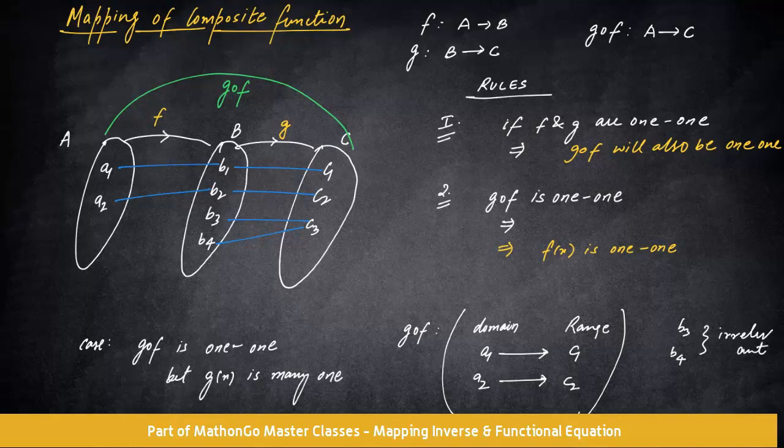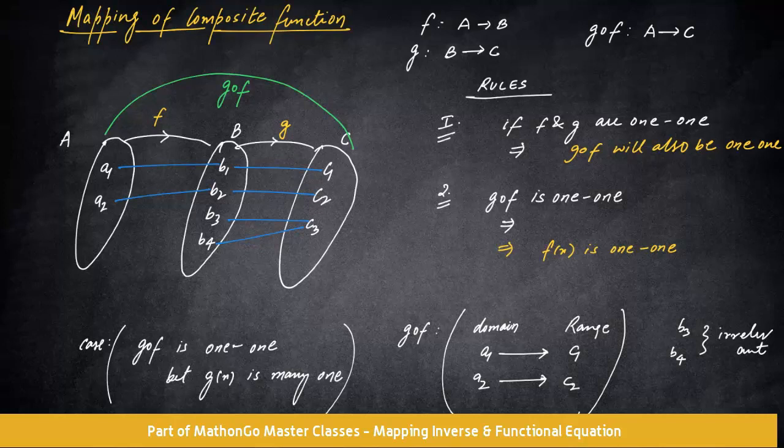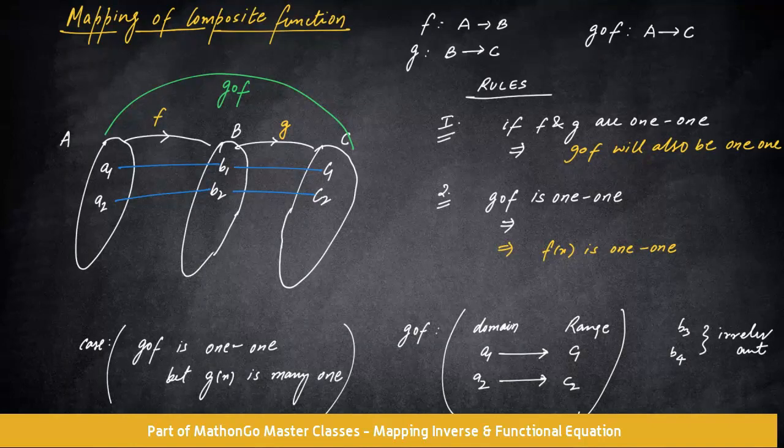Whereas in G of F, there is no talk about B3 and B4. So for G of F, B3 and B4 are irrelevant. We will not talk about them. If they are irrelevant, just notice here what is happening. F is completely one-one. Why? Because one value of x has one value of y. Whereas if you notice Gx, two values of x have same value of y. That means this is many-one. And since it is many-one, that is what we were talking about that if G of F is one-one, Gx could be one-one or could be many-one at the same time. If you remove B3, B4 and C3, then everyone will become one-one. But it may or may not be, that is why I was saying it may or may not be one-one.